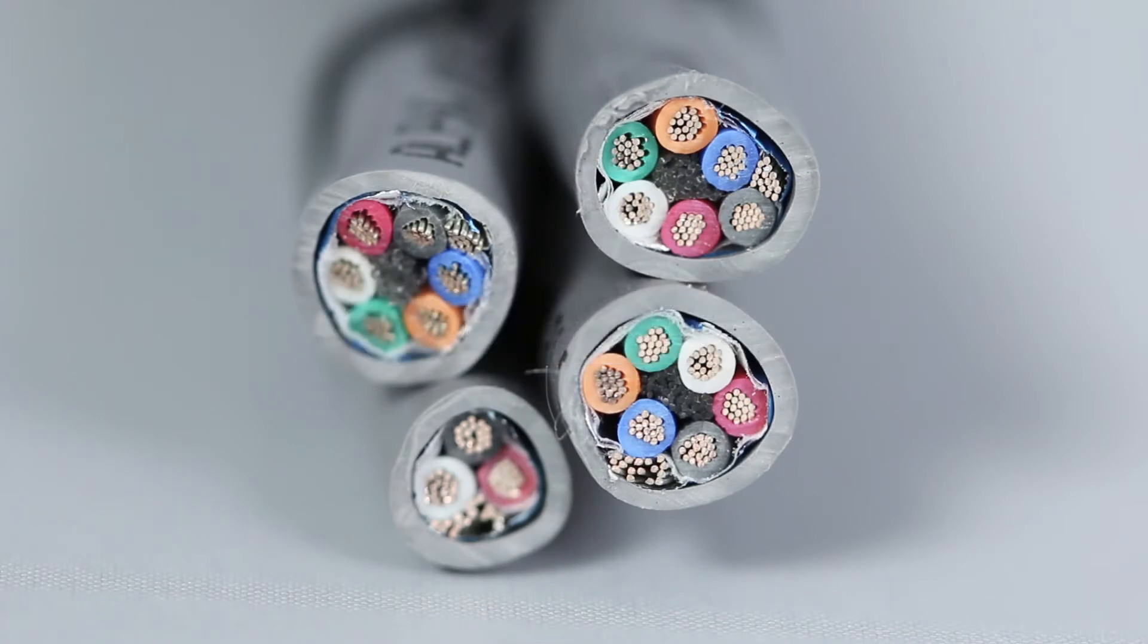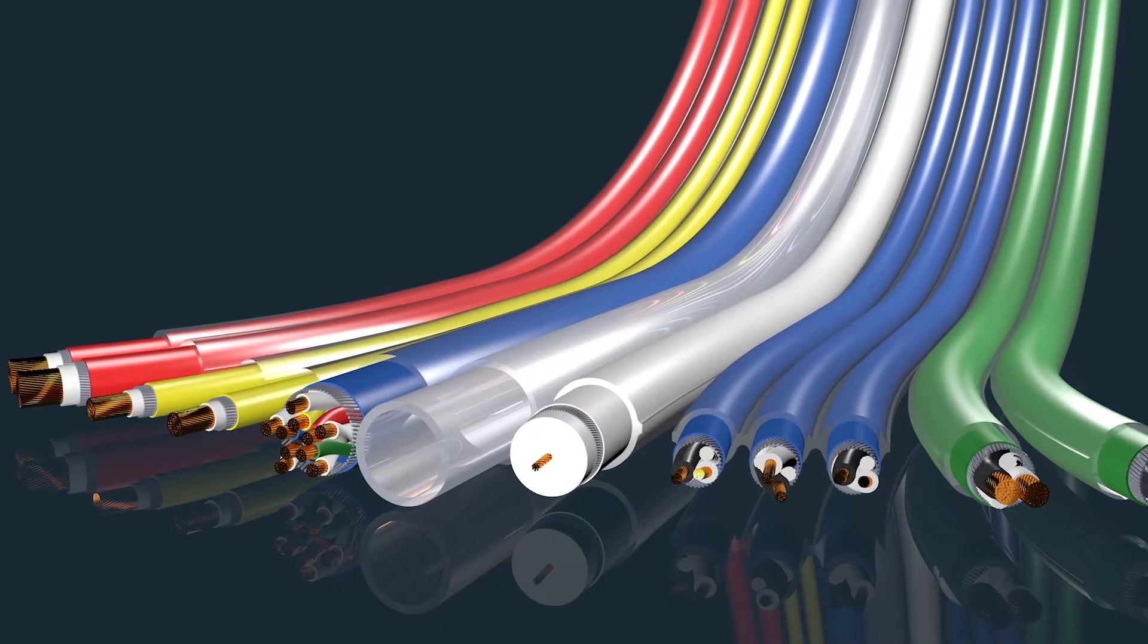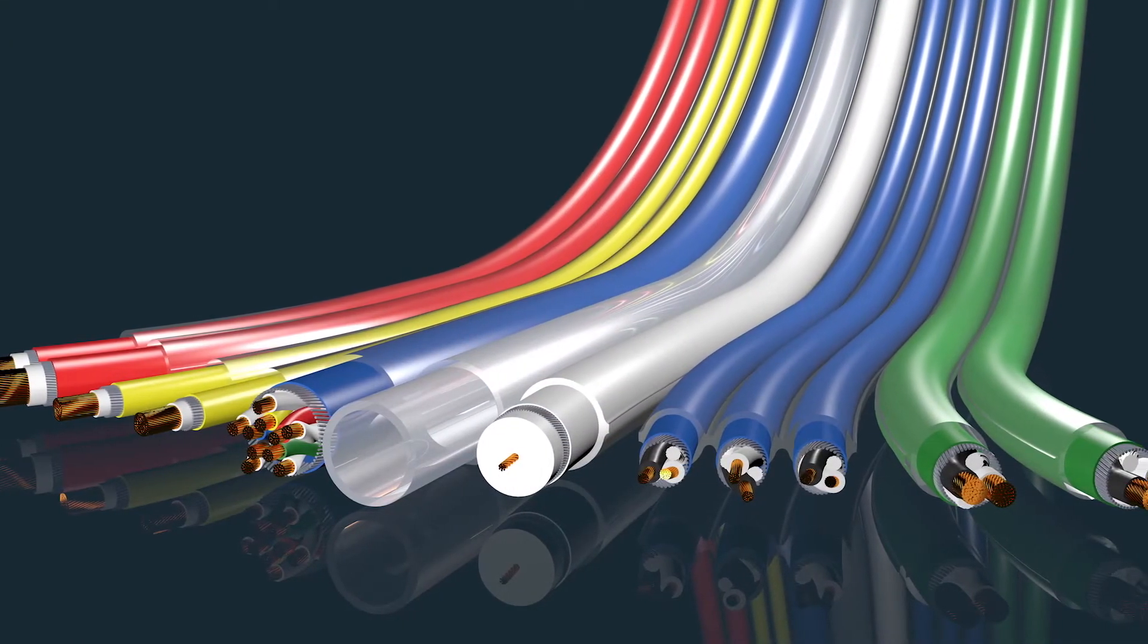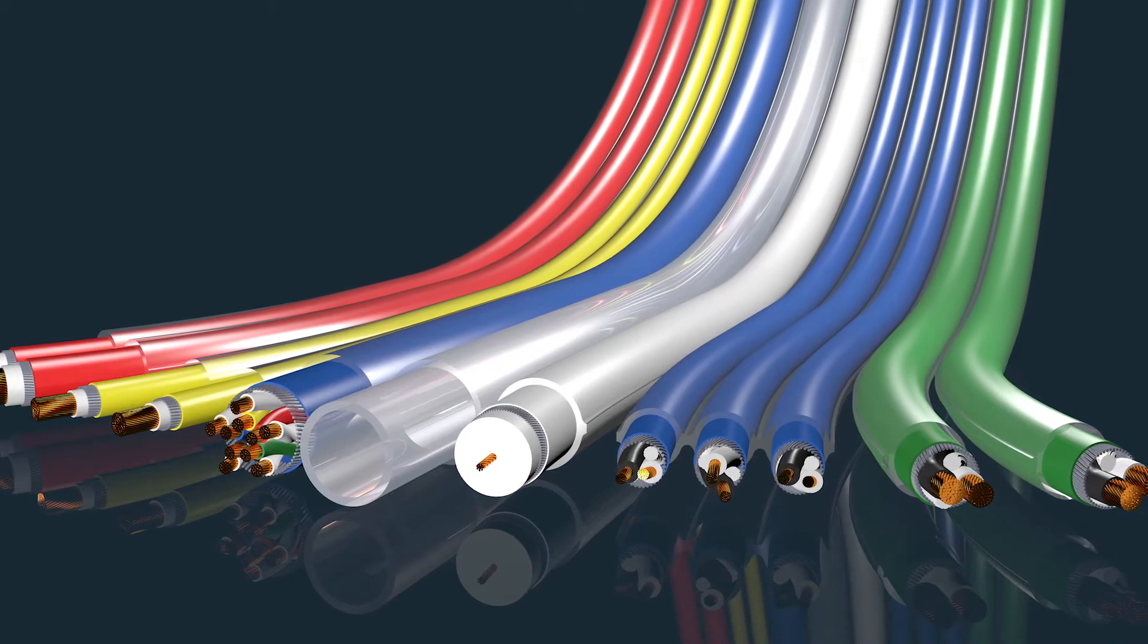Round cables have multiple layers of fillers, shields, and jacketing inside their cables which take up a lot of space. Flat cables, on the other hand, eliminate many of these redundant materials, allowing extremely compact packaging of electrical conductors and tubing.